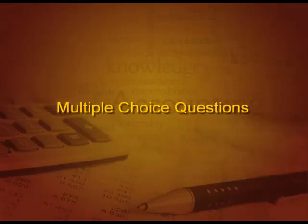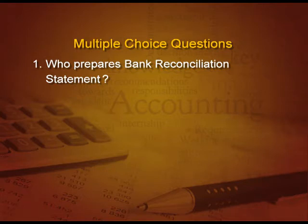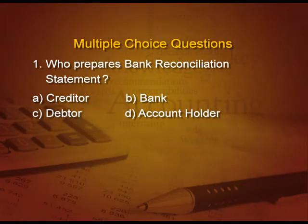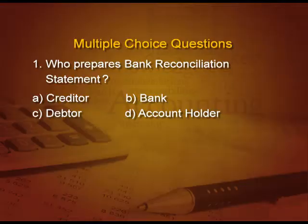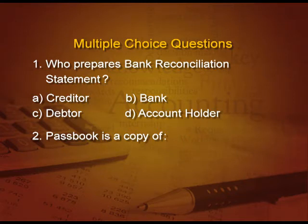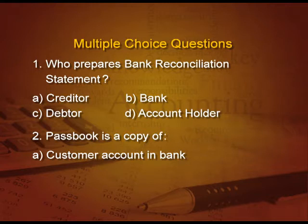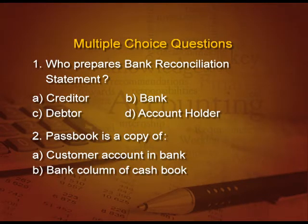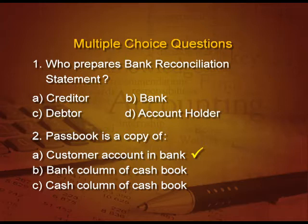Let us check what we have understood by way of a few multiple choice questions. First question: who prepares a bank reconciliation statement? Options are creditor, bank, debtor, or account holder. It is not the bank — it is the account holder, because you want to tally your accounts. Second question: pass book is a copy of what? Option A: a customer account in the bank; B: bank column of the cash book; C: cash column of the cash book. The answer is A — customer account in the bank.